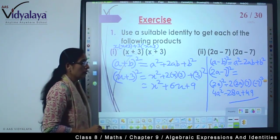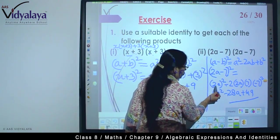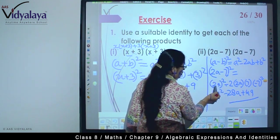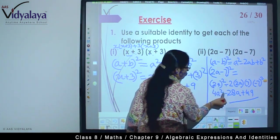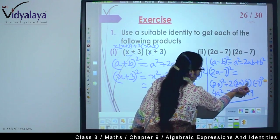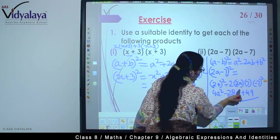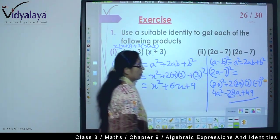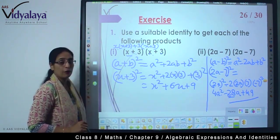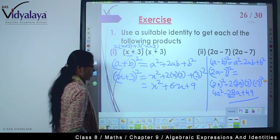28a, 28a. And plus 49. So the answer comes: (2a)² is 4a², minus 28a + 49. So with the help of identity we have solved 2 sums.